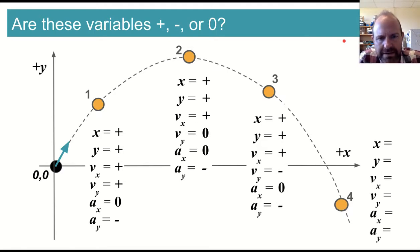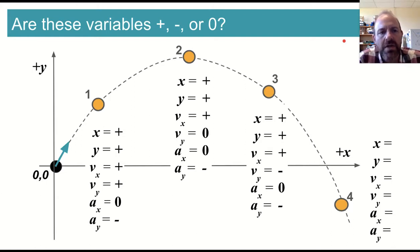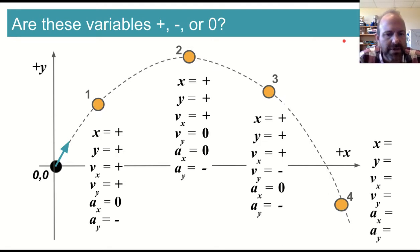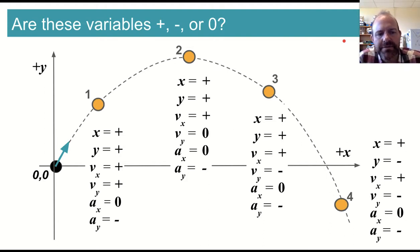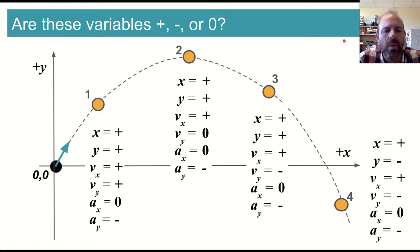As we start to descend, the x and y components of position are still positive. The x component of velocity is still positive — that doesn't change. The y component of velocity is now negative; it's moving downward. The x component of acceleration is still zero, and the y component is still negative because of little g. For the very last point, we're still positive in the x direction, but we've now dropped below the origin in y, so it's a negative position. X velocity is still positive and constant. Y velocity is negative and has gotten bigger and bigger. The x component of acceleration is still zero and the y component is still negative for little g.